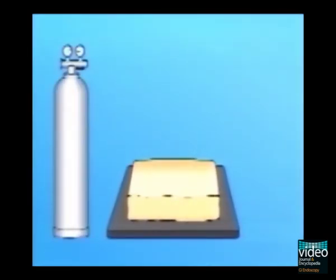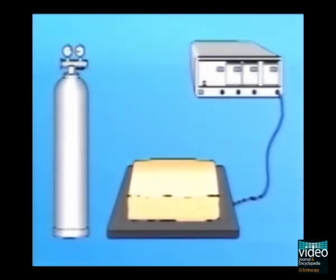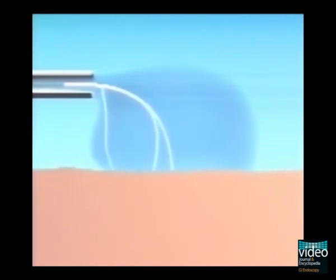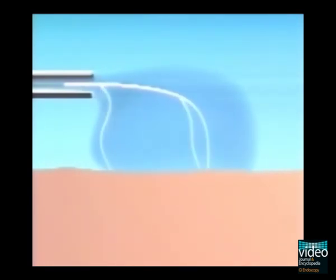This video shows the physical principle of argon plasma coagulation. The argon plasma coagulation APC system consists of a gas source, for example argon gas, a high-frequency generator and an applicator. The high-frequency electrode of the applicator is surrounded by argon gas. The high-frequency current ionizes the argon gas and a plasma field is created between the probe tip and the tissue surface.